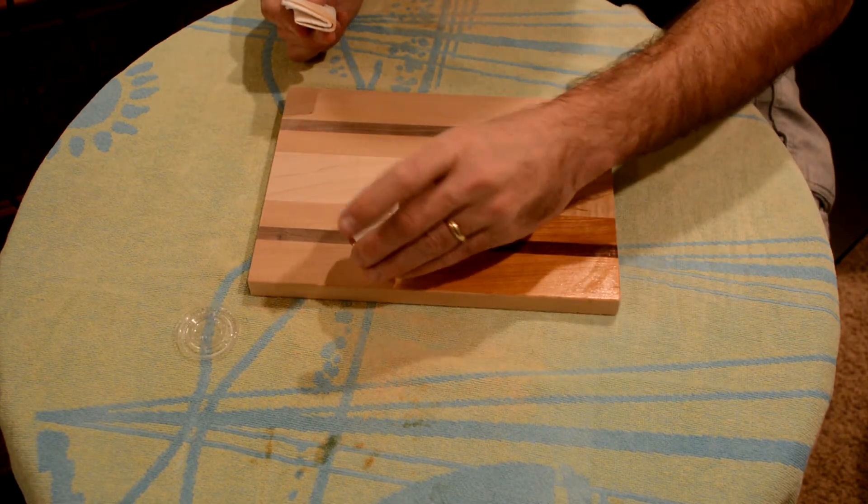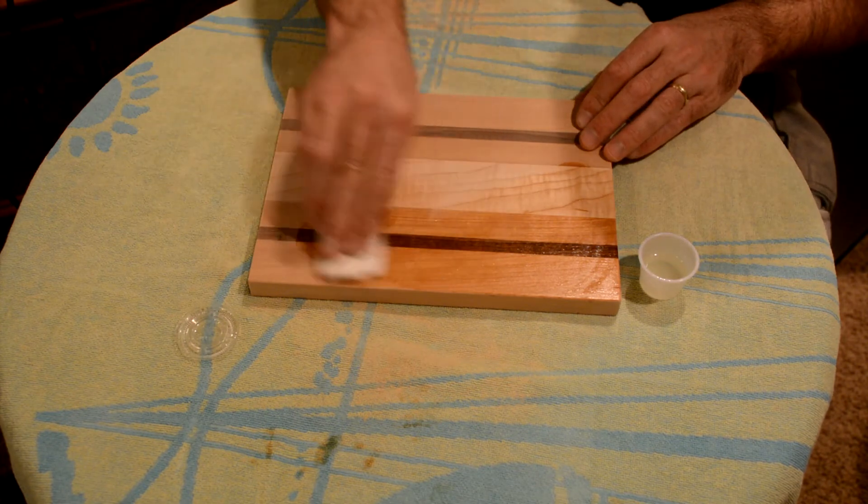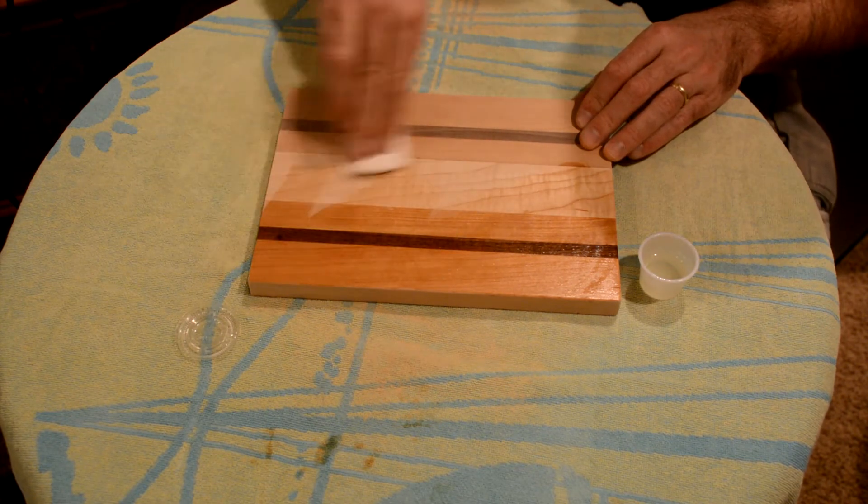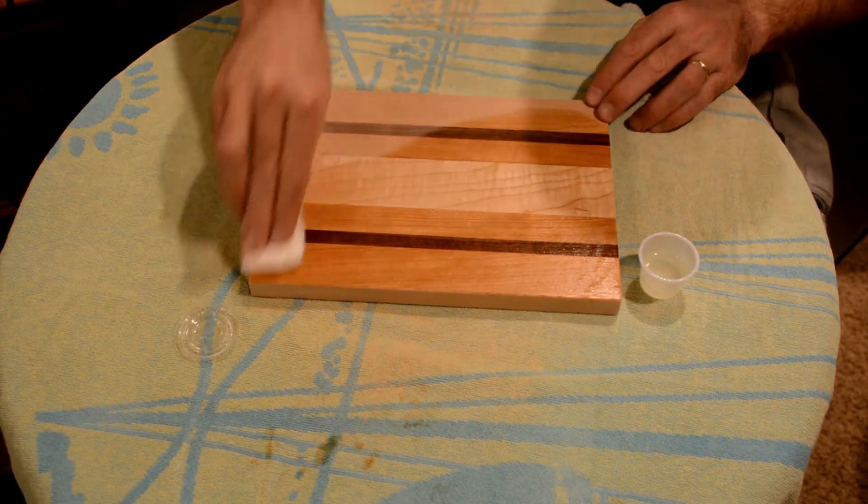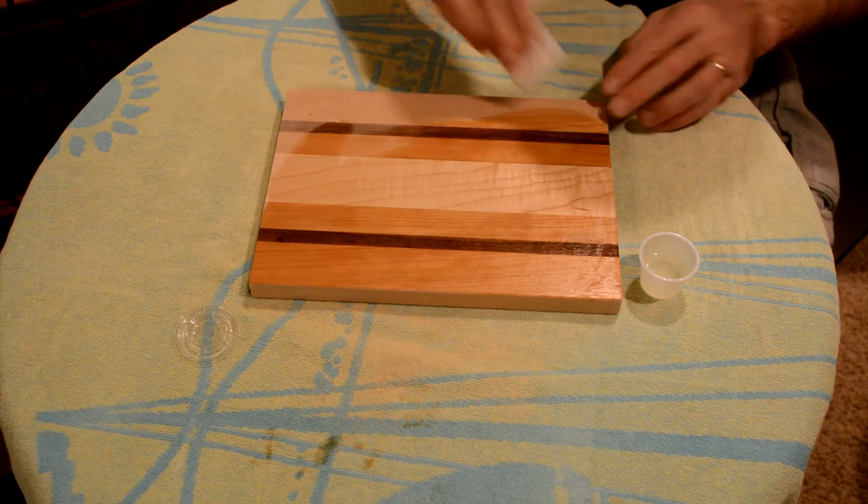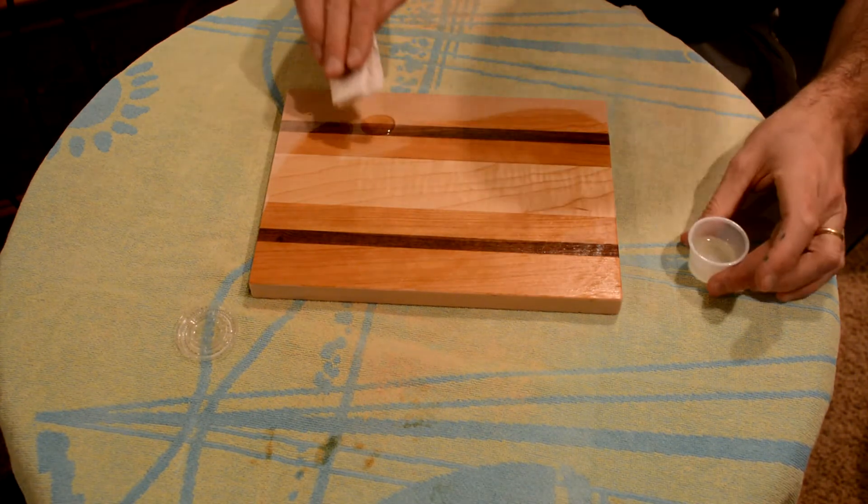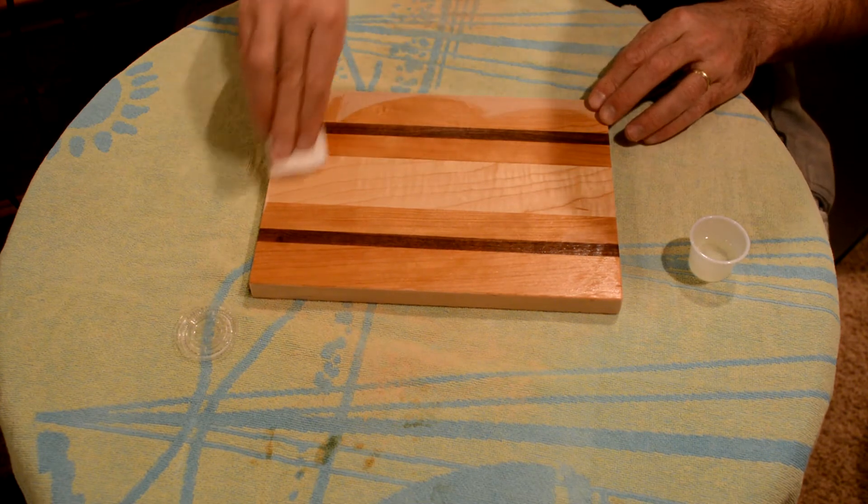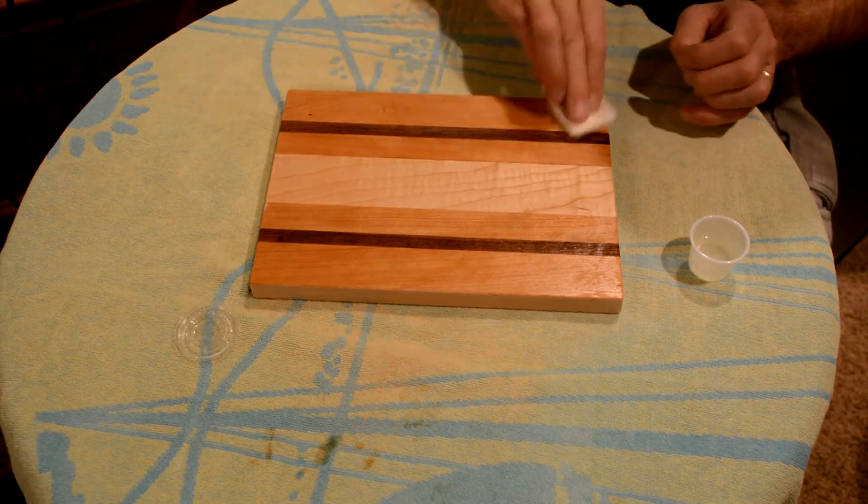And we're just going to spread it around. Look at that. And just work our way around the board. That's more than a dime, but after your first drop you get a sense of how much you need. Since this doesn't have varnishes or solids in it, we don't have to worry about going with the grain. It's just going to soak in. And what this does is protects the wood against moisture and any other intrusions. And it just makes it look pretty.